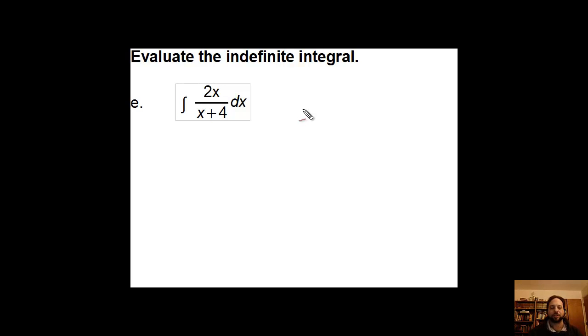Example e brings us to one of those problems where a simple u substitution may not work. Certainly I can drag this 2, it being a constant, to the front of the integral. But there's no way for me to split this fraction up. If I let u be the denominator, x plus 4, that's great. It tells me that du equals dx, but I still have this what I call rogue x sitting around, and I don't know what to do with that.